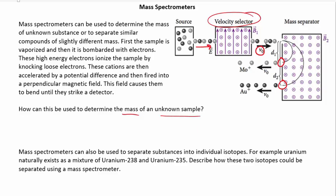Now, another application of mass spectrometers is actually to separate substances into individual isotopes. So, for example, if you were to find uranium naturally in nature, you'd find it as a mix of uranium-238 and of 235.